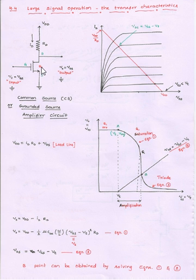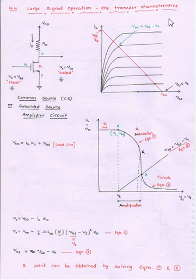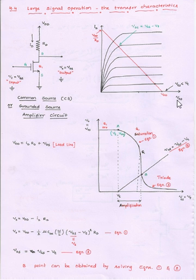Before we draw the transfer characteristics, let us analyze the VDS versus ID characteristics of the MOSFET. The drain characteristics can be plotted between VDS and ID for constant gate-source voltages. VDS is taken along the x-axis, drain current along the y-axis, and the corresponding gate-source voltage is fixed for each set of values, giving us families of curves.